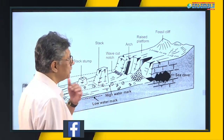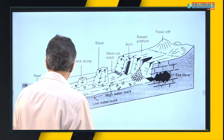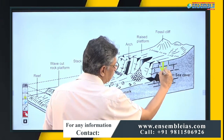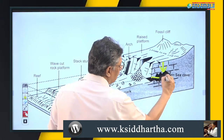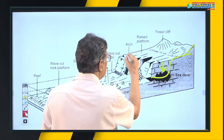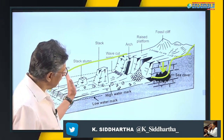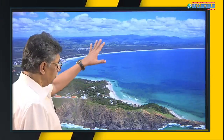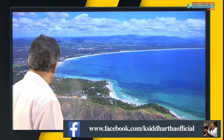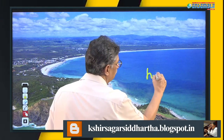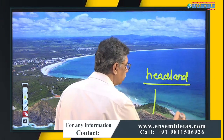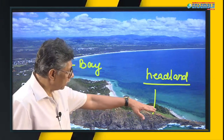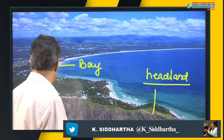As the cliff migrates backward, it leaves behind a wave cut platform. These features develop near what we call a headland. A headland is the area that becomes the site of attack by waves. The area between headlands is called a bay. Both headland and bay are different features. When hard and soft rocks are arranged alternately on the coastal region, soft rocks get eroded while hard rocks resist, forming headlands.